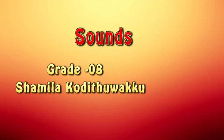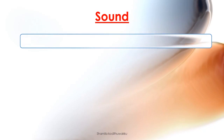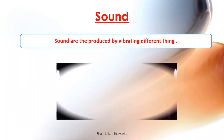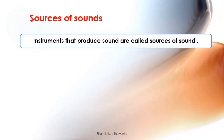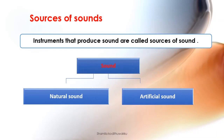Sounds are produced by vibrating different things. Instruments that produce sounds are called sources of sound. Sounds can be divided into two parts: natural sounds and artificial sounds.